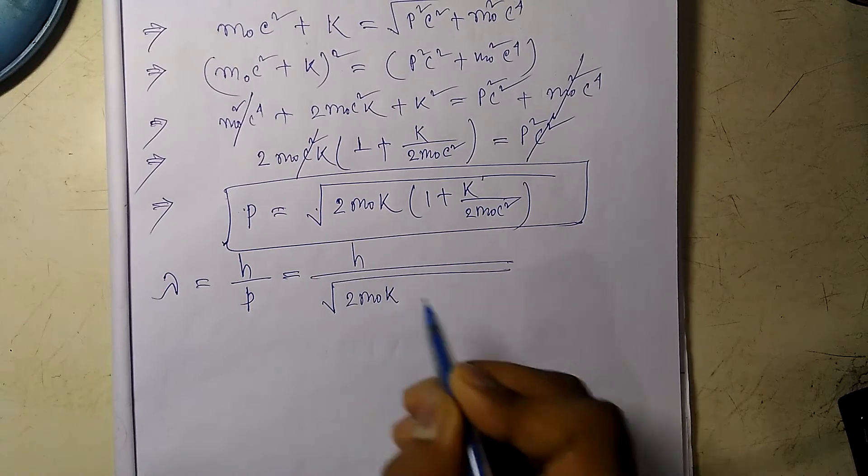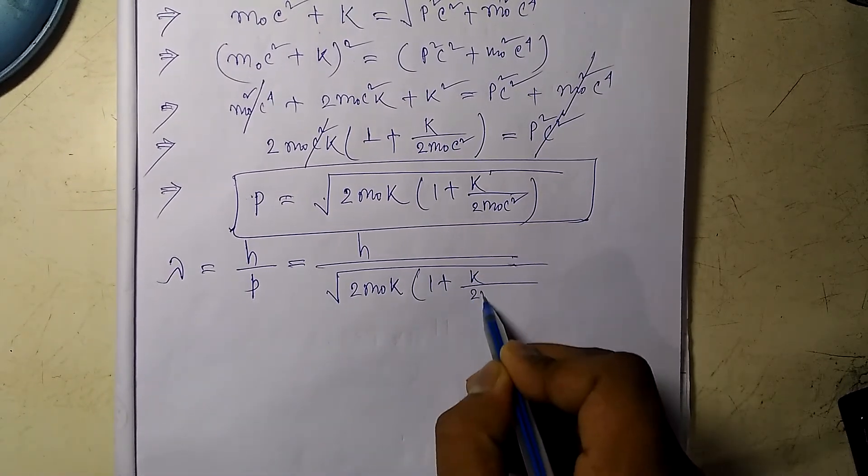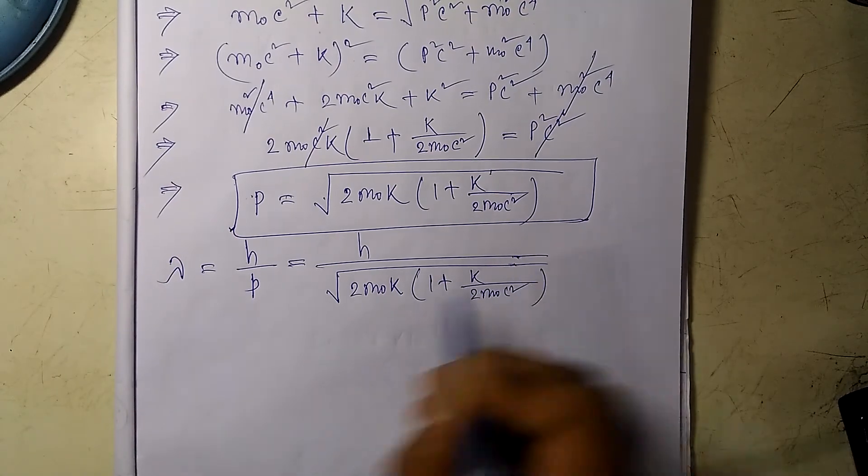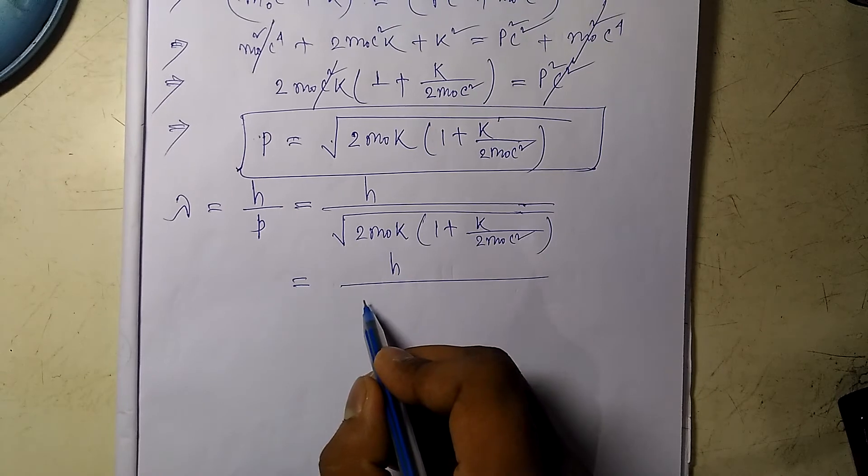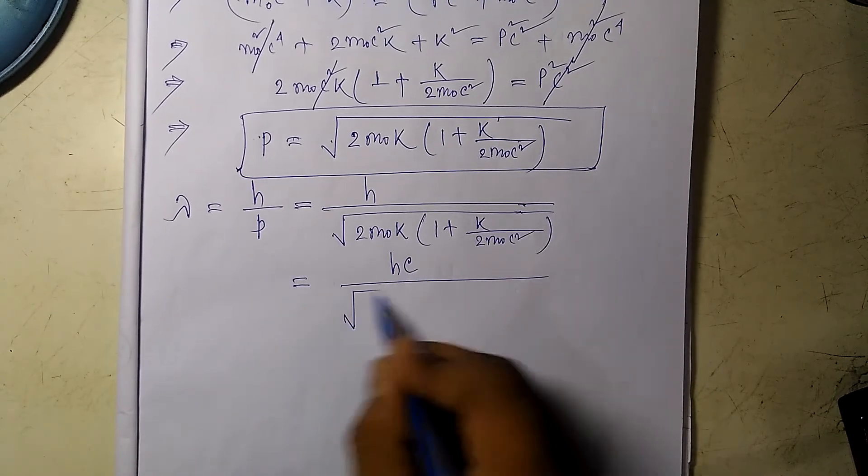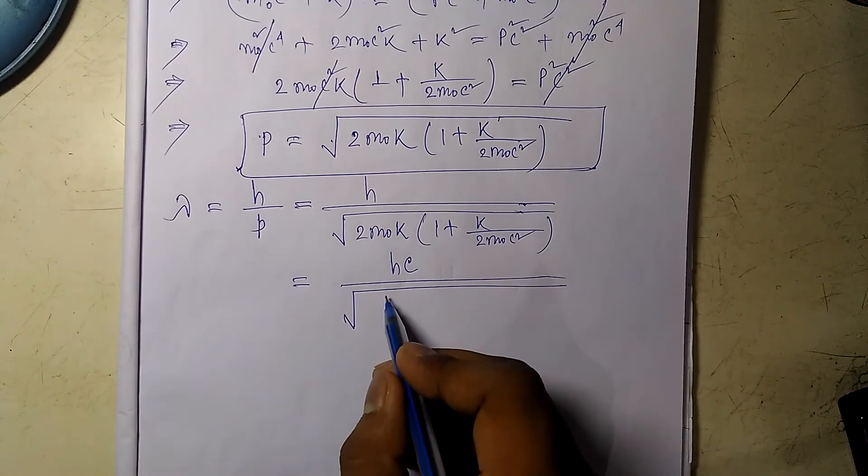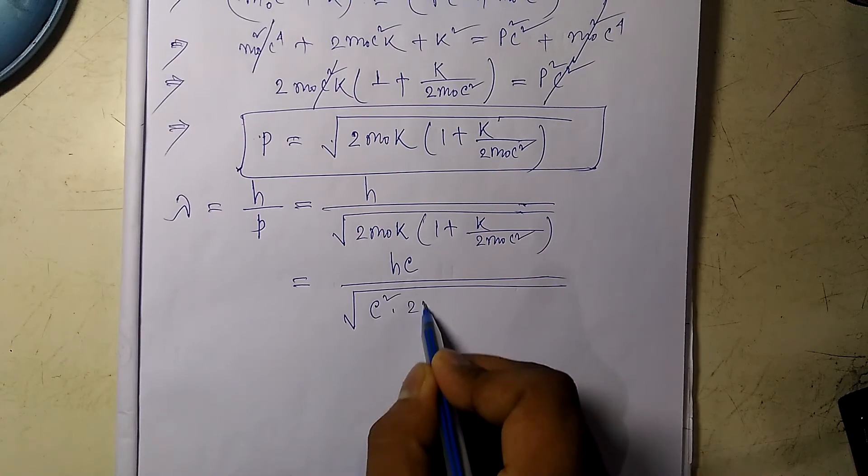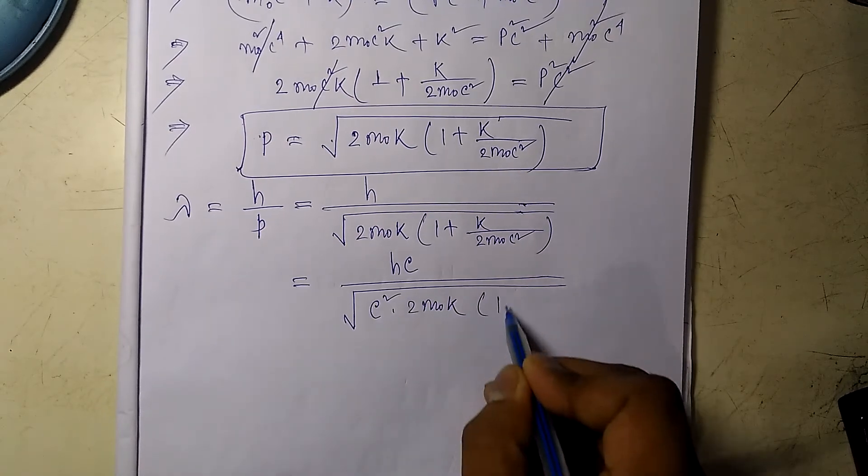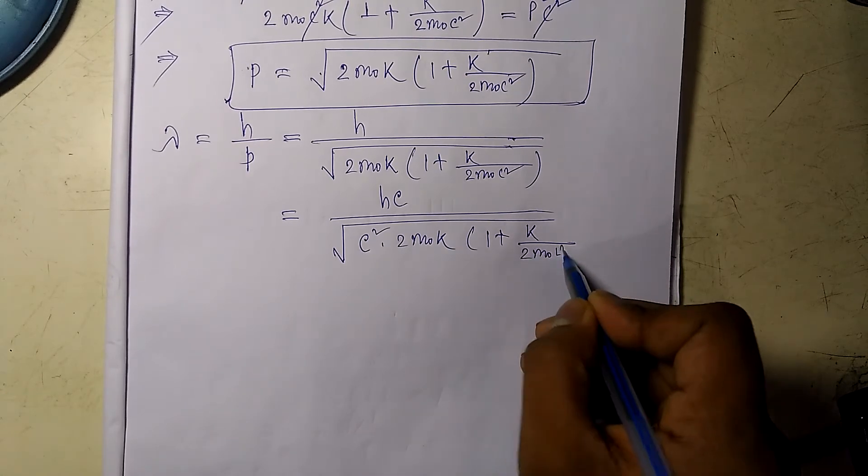It would be h divided by the square root of 2m₀K times (1 plus K divided by 2m₀c²). Now if I multiply c on both sides, taking c inside the square root, it would be c² times 2m₀K times (1 plus K divided by 2m₀c²).